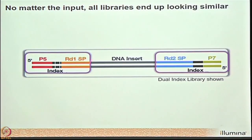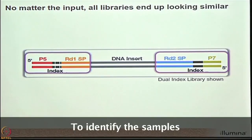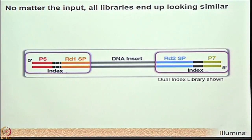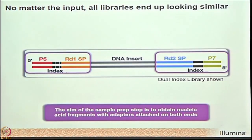The Rd1 region is the sequencing primer binding site where the read 1 sequencing primer will bind. Flanking both ends are indices, also called barcodes. The function of barcodes is to identify which sequences belong to which sample — for example, using NovaSeq you can sequence 50 genomes together, and barcodes allow demultiplexing. The ultimate goal of library preparation is to ligate adapters at both ends of all DNA fragments.